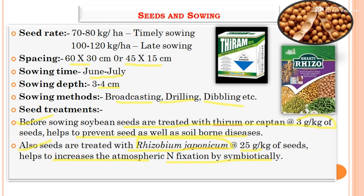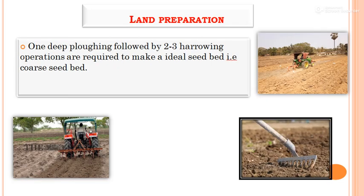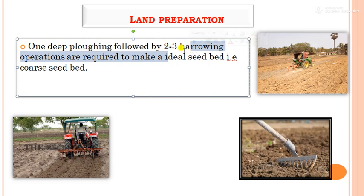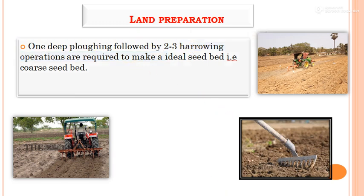For land preparation, soybean being a kharif season crop requires one deep plowing operation since its roots are fibrous. It requires one deep plowing followed by two to three harrowing operations to prepare an ideal fine seedbed.